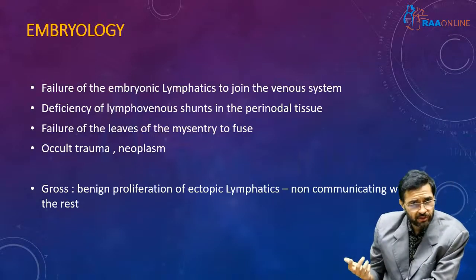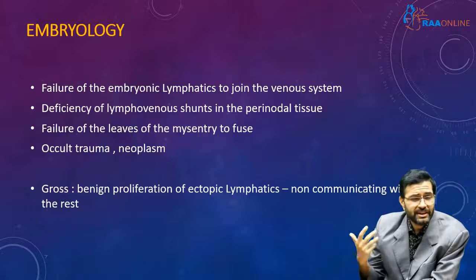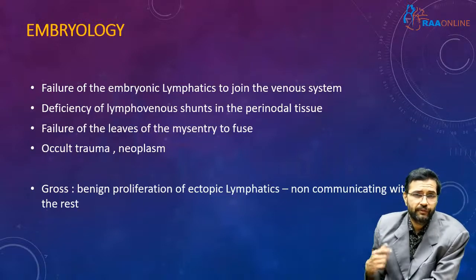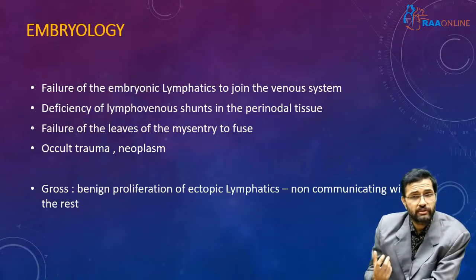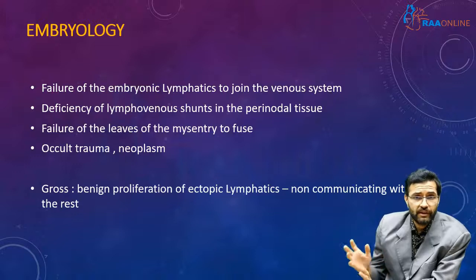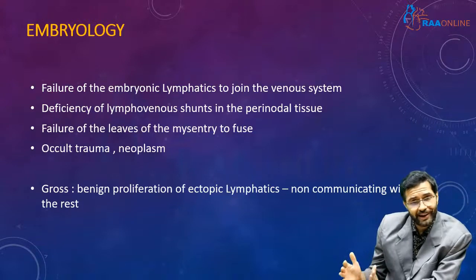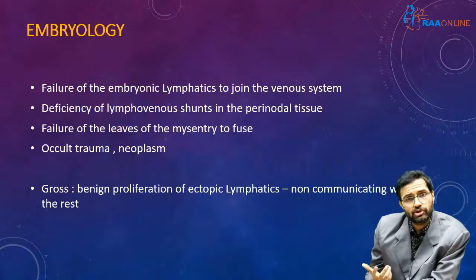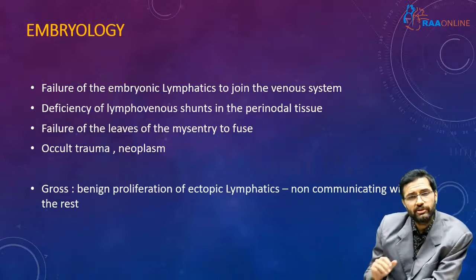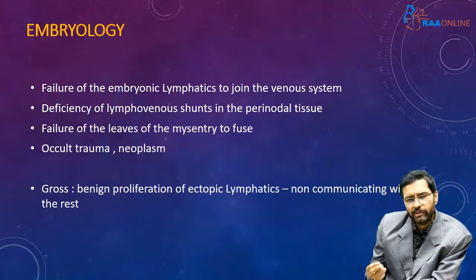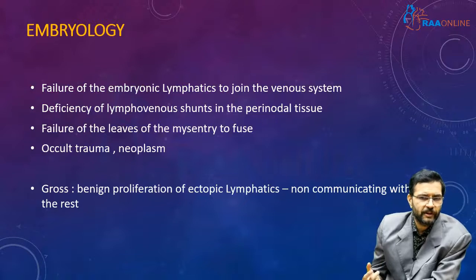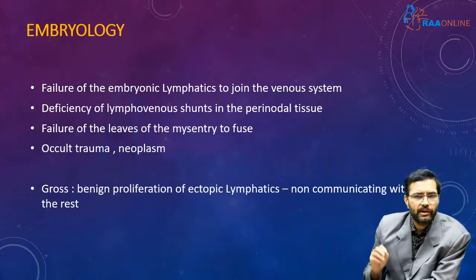Since both mesenteric and omental cysts are derivatives of lymphatics, together they can be termed cystic lymphatic malformations. Many theories were proposed for why such cysts occur: failure of embryonic lymphatics to join the venous system, deficiency of lymphovenous shunts in the perinodal tissue, failure of the leaves of the mesentery to fuse creating a gap in which lymph accumulates, and occult trauma or neoplasms. The most widely accepted theory was proposed by Gross, who postulated that these cysts arise because of benign proliferation of ectopic lymphatics in the mesentery which do not communicate with the normal lymphatic supply.